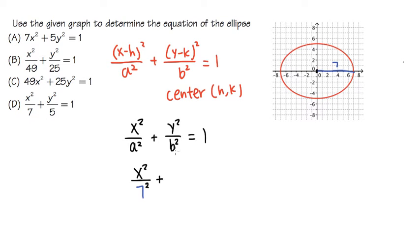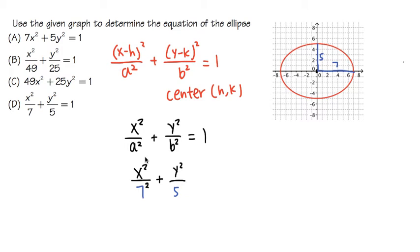Now for the b value — b is underneath the y, so you associate that with up or down movement. Go to the center and count up or down to the ellipse. Counting upward: 1, 2, 3, 4, 5 — we move up 5 times. So b equals 5, giving us y squared over 5 squared, equal to 1.